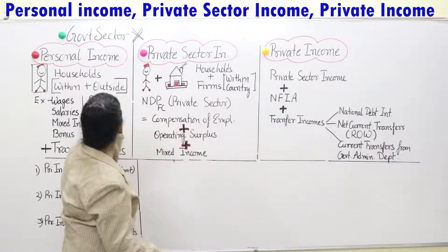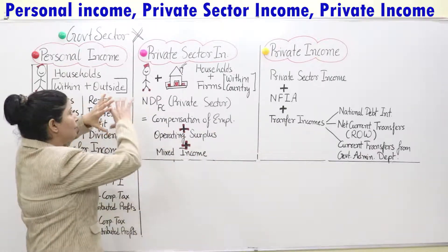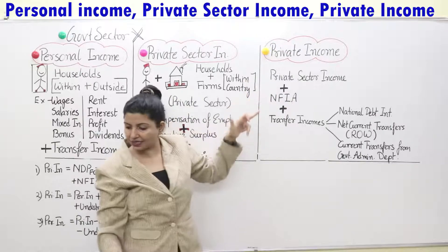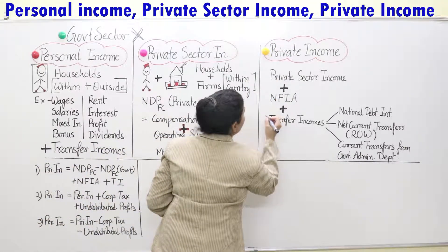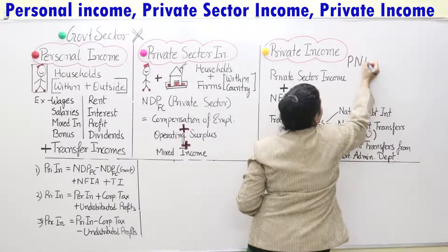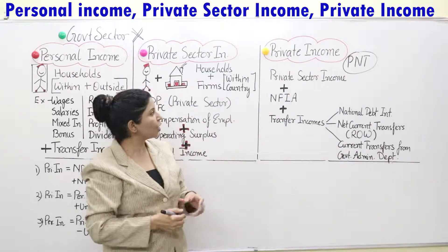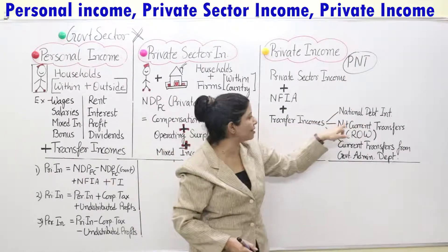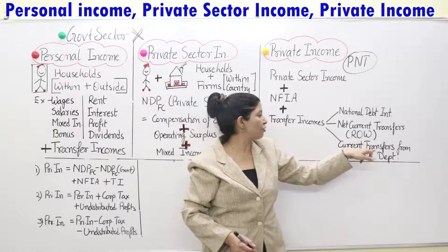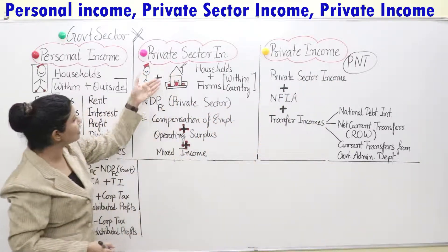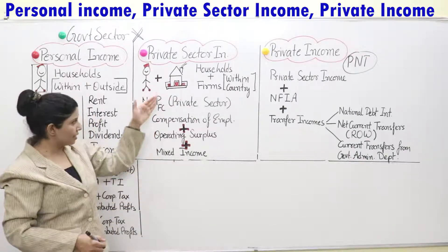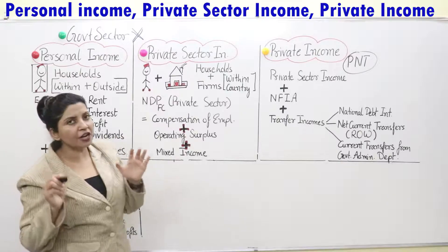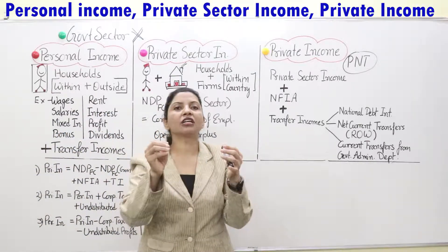So that's all about personal income, private sector income, and private income. Remember: private sector income is the only one where rest of the world is not included. We can abbreviate private income as P&T — private sector income, net factor income from abroad, and transfer income. Transfer income again has NLC: national debt interest, net current transfers, and current transfers from government administrative departments. Private sector income is simply your NDP at factor cost, nothing else.